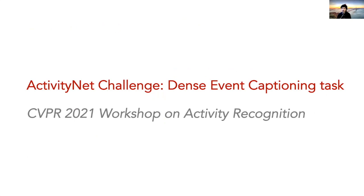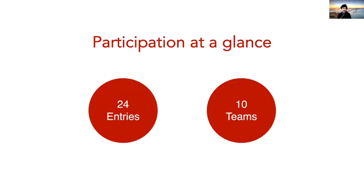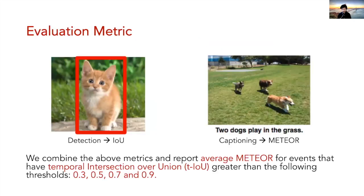Now for the details from this year's challenge. At a glance, we had 10 teams participate this year with 24 entries. Our evaluation metric combines both the detection and localization aspect as well as the captioning aspect. We use temporal intersection over union as the key localization metric, and Meteor for the captioning component. Overall, we take the average Meteor score across a range of temporal intersection over union thresholds.